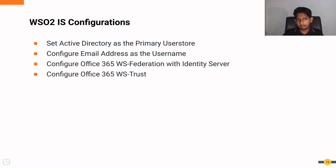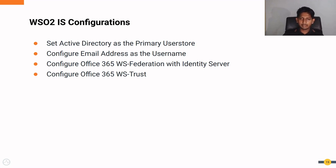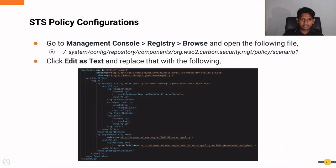Next, we need to configure the system to use the email address as the username when users are trying to log in. For the third and fourth configurations, we need to configure Office 365 to federate users using WS-Federation as well as WS-Trust. For all four of these configuration points, there is official documentation in WSO2 Identity Server, which I will attach in the video description, and there are no other changes between the documentation and how the configuration should be done.